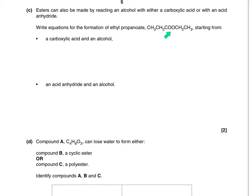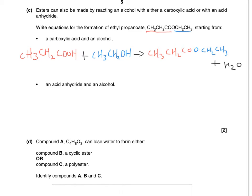The 'oate' part — up to the carbonyl bond — comes from your carboxylic acid, or your acid anhydride as asked in the second bullet point. So for the carboxylic acid, this would be propanoic acid. The red pen represents this propanoic acid part of the ester, reacting with ethanol — the blue part — to make ethyl propanoate.